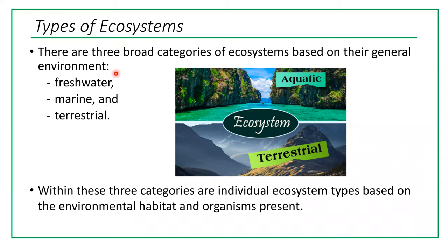There are three broad categories of ecosystems based on their general environment: freshwater, marine, and terrestrial. Within these three categories there are individual ecosystem types based on environmental habitat and organisms present.